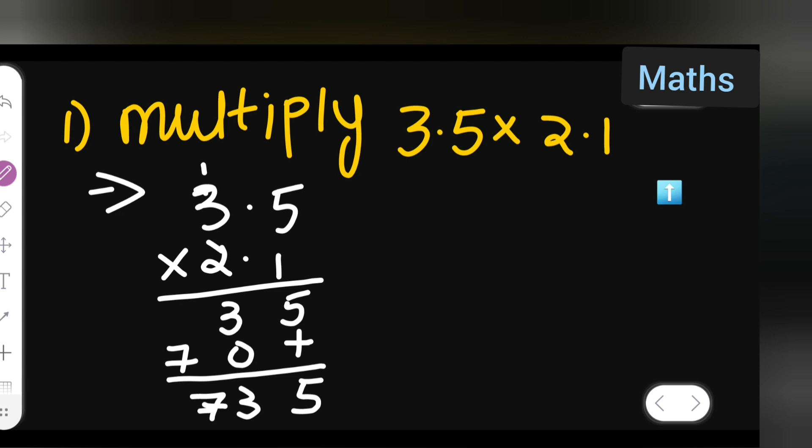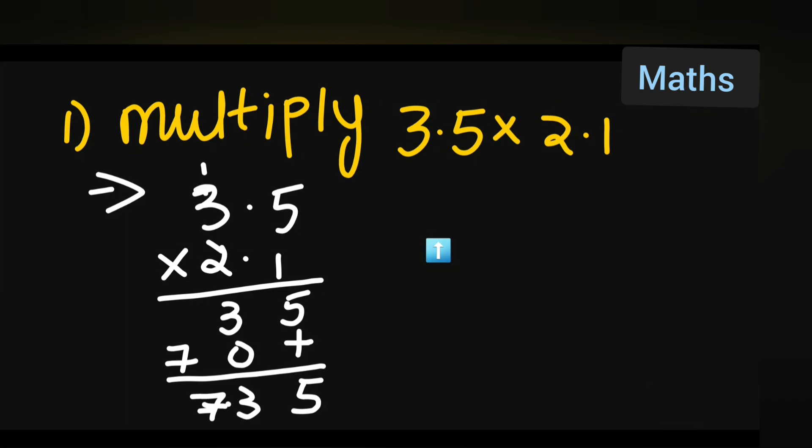7, 3, 5. So what is your answer? 7, 3, 5. But where is the decimal point going to come? There are 2, 1, 2, right? So 7.35. Okay, so your answer is 7.35.